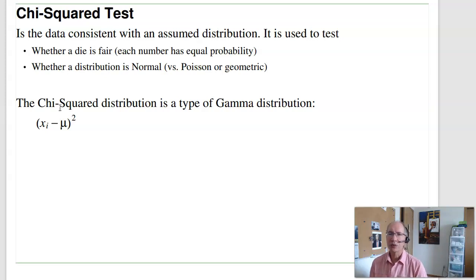It can be used to test whether a die is fair, meaning each number has equal probability, or whether a certain number is coming up more often than it should. It can test a roulette wheel. Is a roulette wheel fair, or are some numbers coming up more than they should?